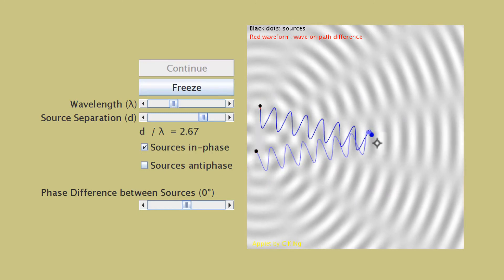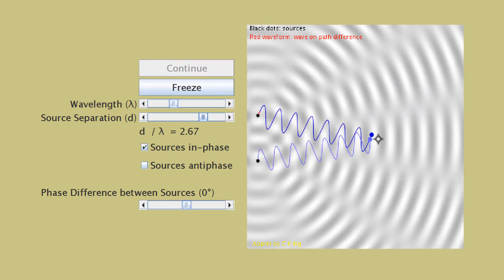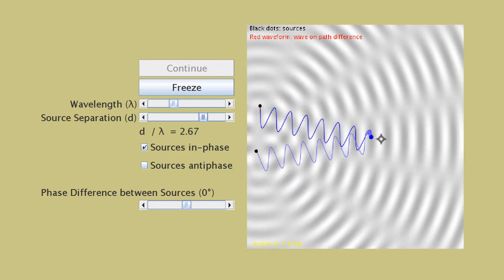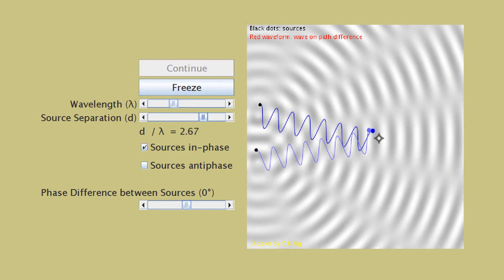And at the destination, the two waves also arrive in phase. You can see the blue and the purple dots, both going up and down in phase.